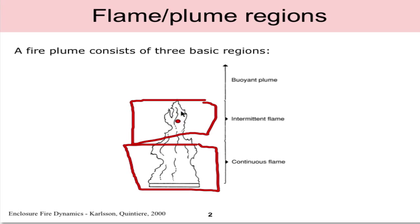Above that we have an intermittent flame region and here flame may or may not exist due to pulsing and entrainment. Here we may see flickering or pulsing where there's not always flame.